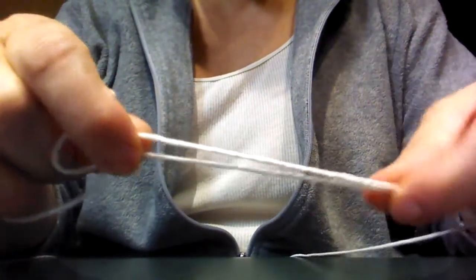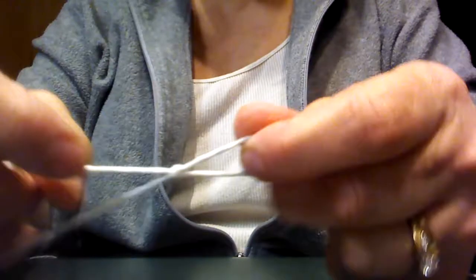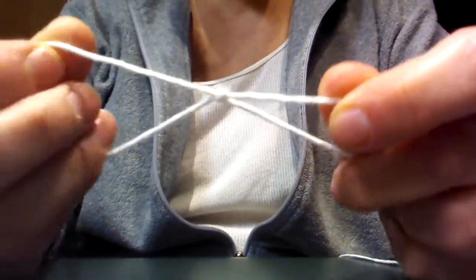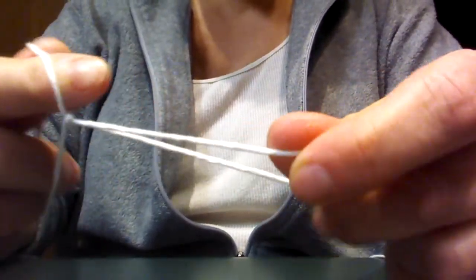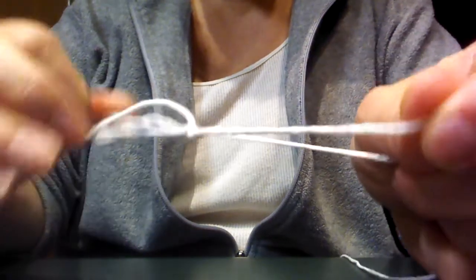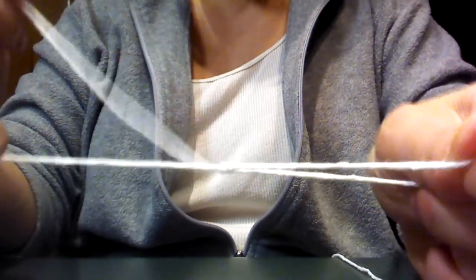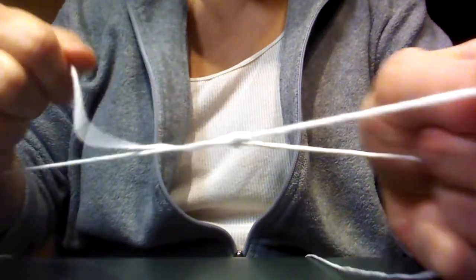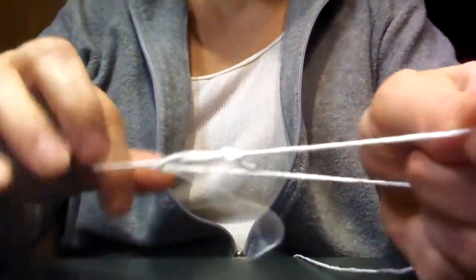Pull the long end of your string just a little bit. Okay, so you end up with a loop like that. Then bend your string down, and pull the long string through. Make it tight. And then you're going to continue to do this until you reach your desired length of chain.